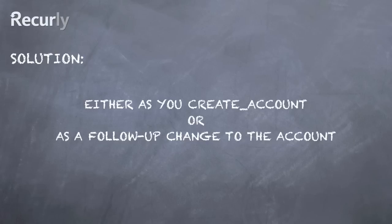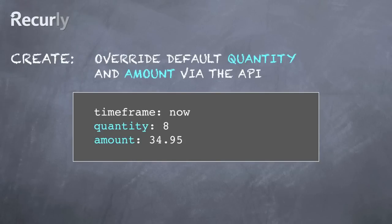Let's take a look at a specific example of how you would change these parameters upon account creation. These users can all sign up under the same basic subscription plan. As long as you're tracking quantity on your side and mapping it to the desired amount of your pricing tiers, you can pass those parameters directly to Recurly's API.